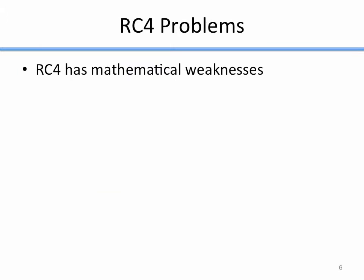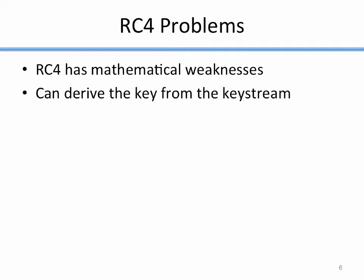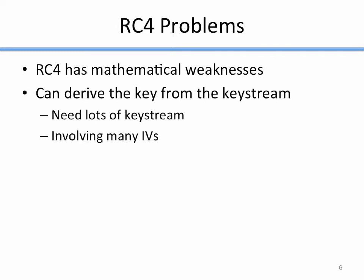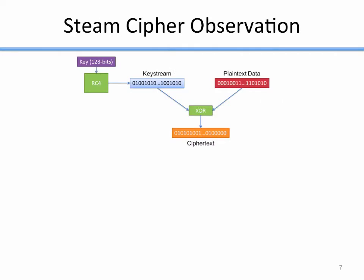RC4 has some problems. The first and main issue is that it has mathematical weaknesses, meaning you can derive the key by analyzing the keystream. If you have enough keystream, you can derive the key in RC4 — normally you should not be able to go from keystream back to key, but RC4's weaknesses allow that. However, you need a lot of keystream to do it. Because the key changes with every packet due to the IV, we need lots of keystream involving lots of IVs.